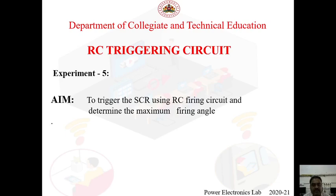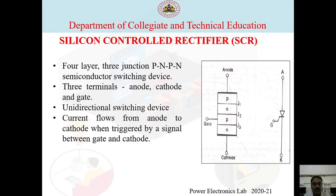The aim of this experiment is to trigger the SCR using an RC firing circuit and determine the maximum firing angle. As we know, SCR is having four layers and three junctions, and it has got three terminals: anode, cathode, and gate. This is the layer diagram of SCR and the symbolic representation of the device, showing anode A, cathode K, and gate G.